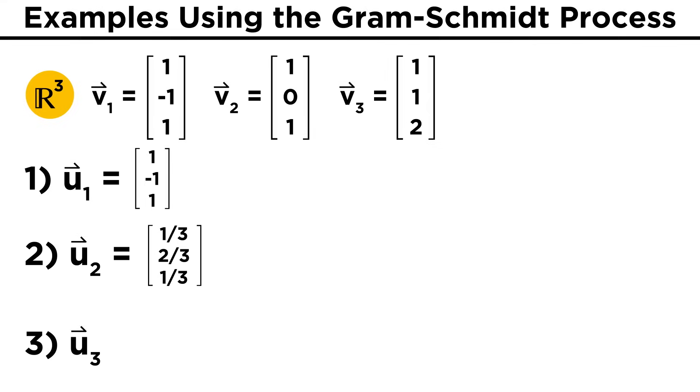Finally, for the third vector u3, we will take v3 minus v3 dot u1 over u1 dot u1 times u1, minus v3 dot u2 over u2 dot u2 times u2.